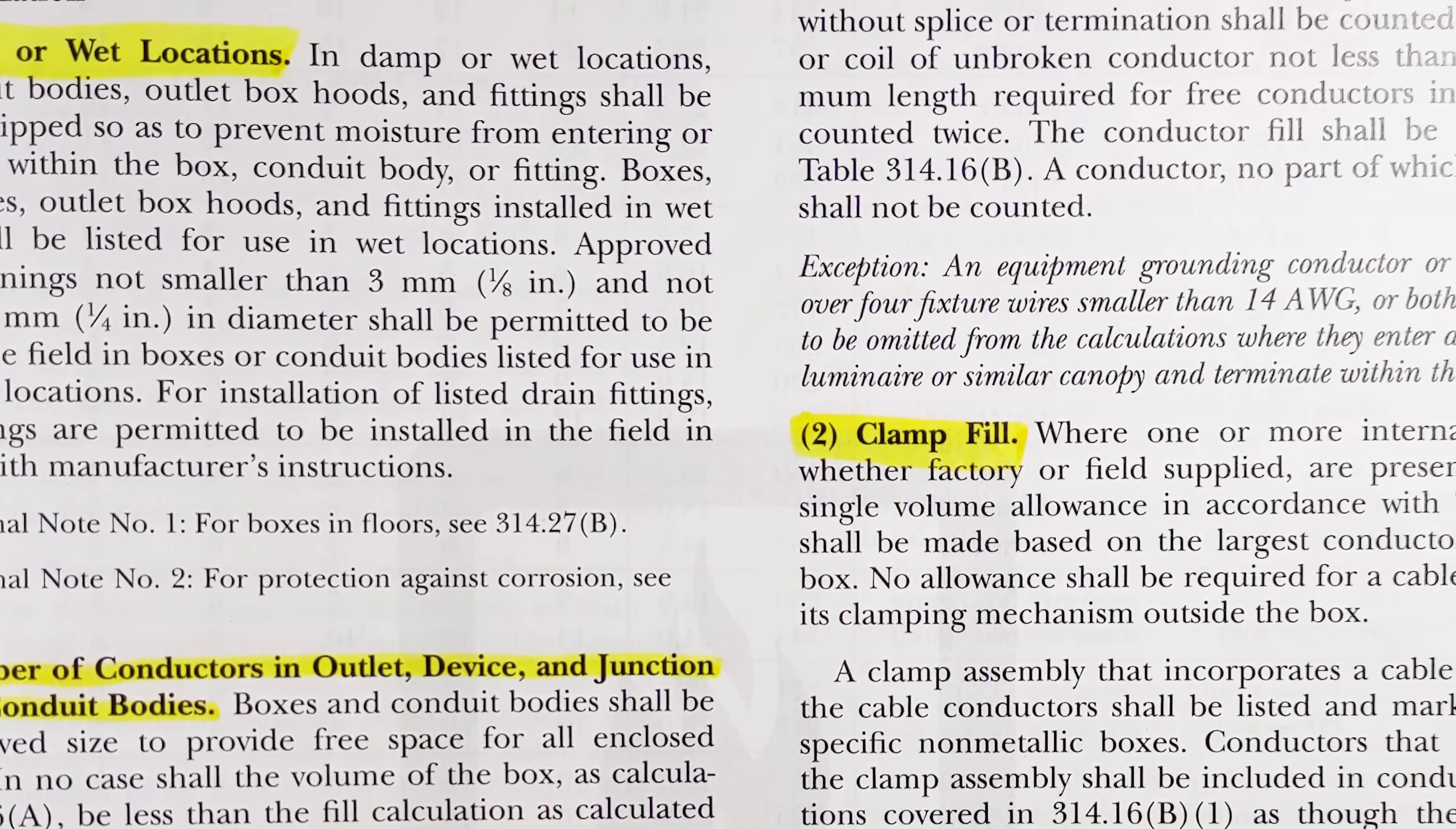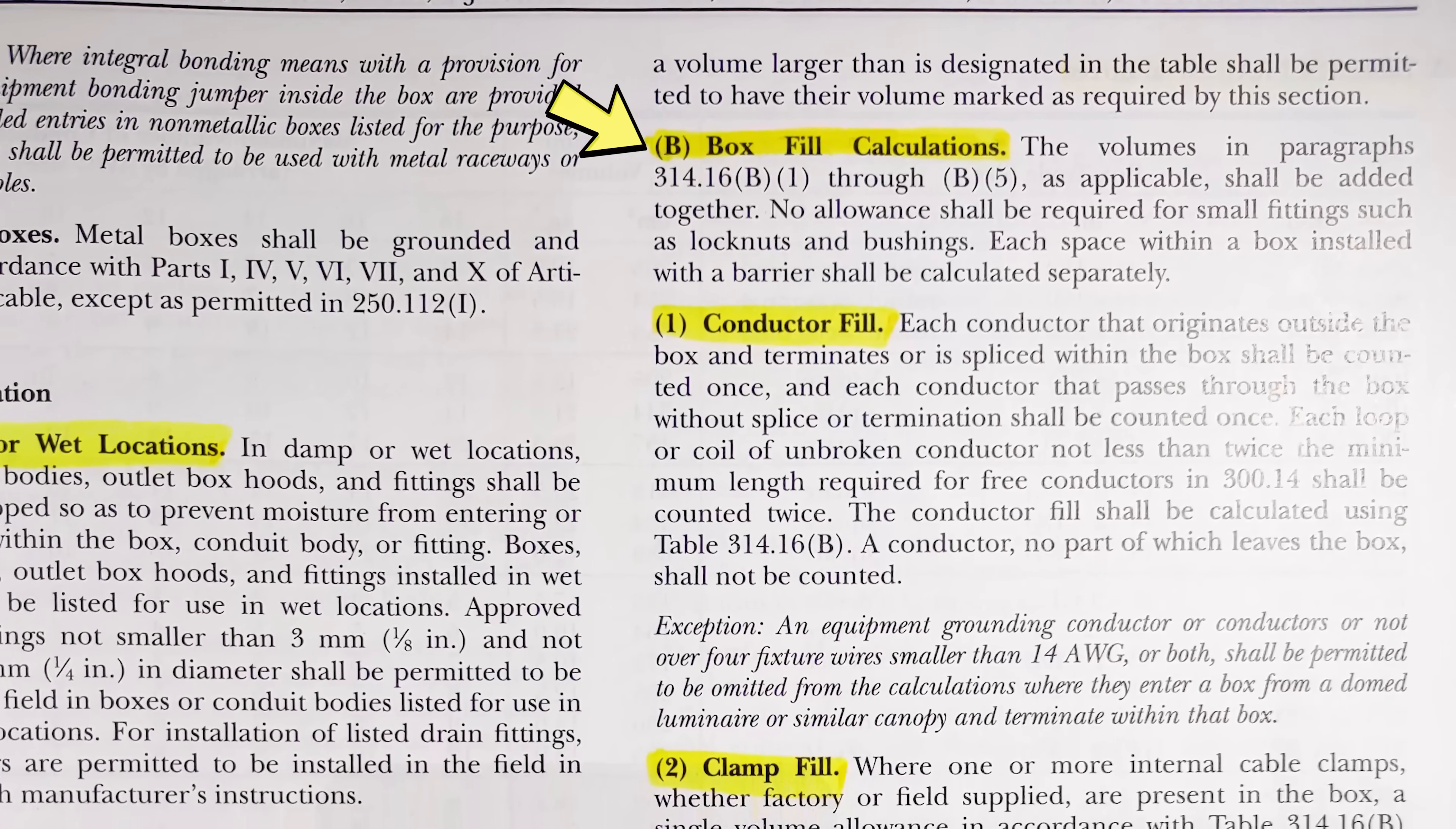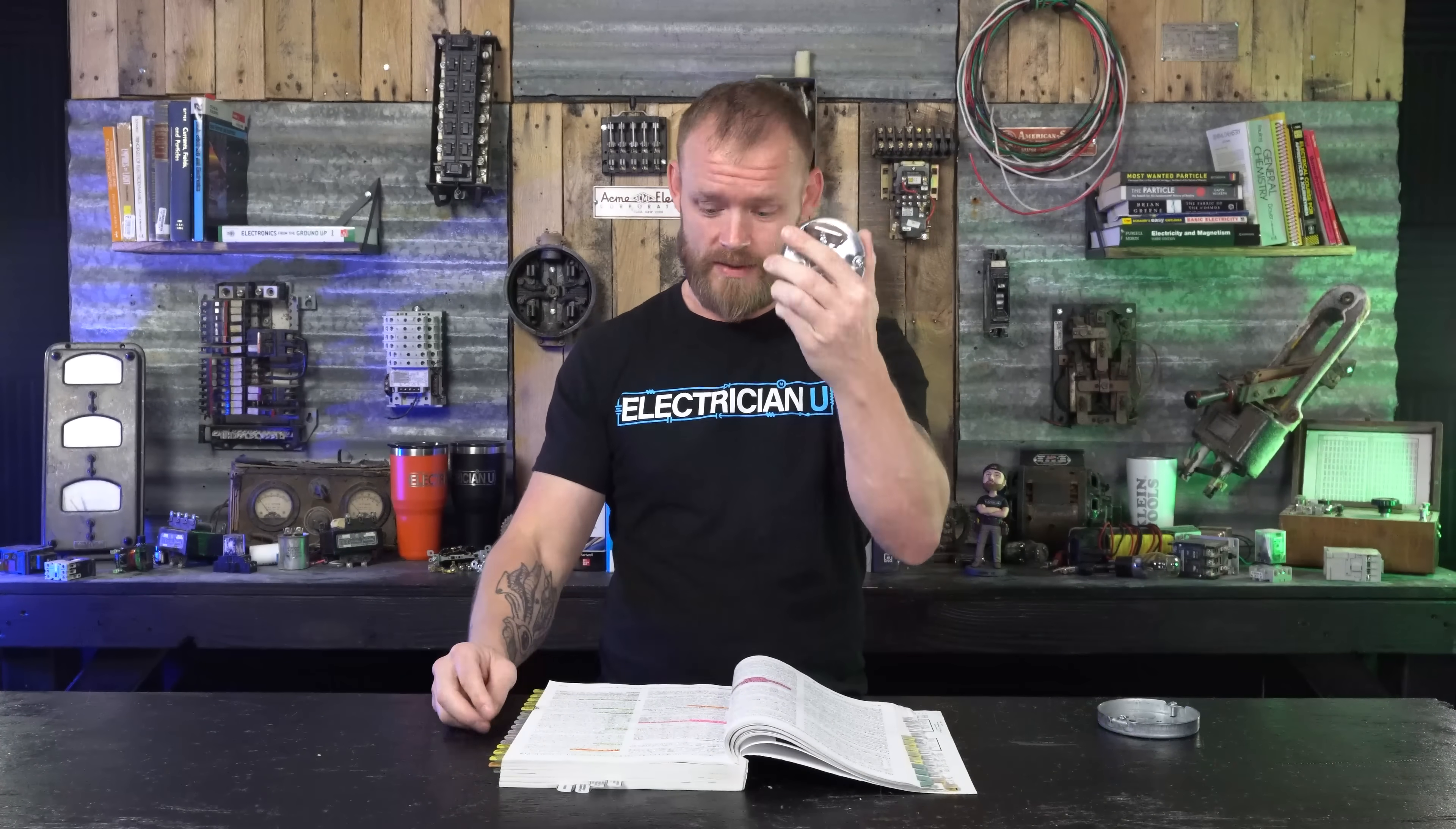314.16b says box fill calculations. There's number one which is conductor fill. Each conductor has a certain volume that we have to use based off the size of the conductor to calculate how many conductors we can fit in this thing.